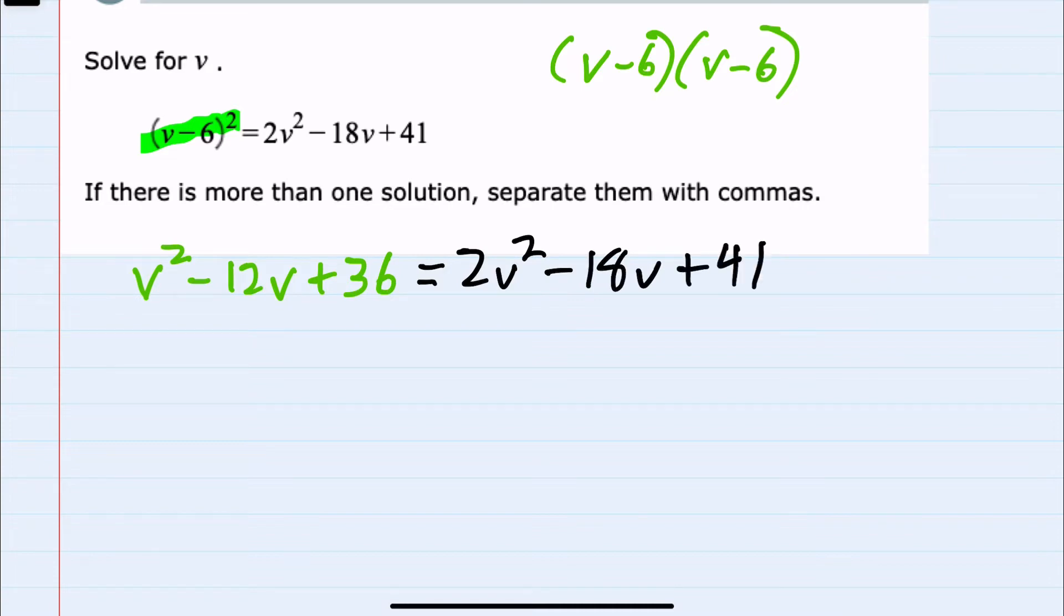Now to continue solving, I would want to set this equal to 0 by moving everything to either the left or the right-hand side of the equation. Looking at the lead terms on the left and the right, since the right has a 2v² and the left just a 1v², I'm going to subtract everything from the left.